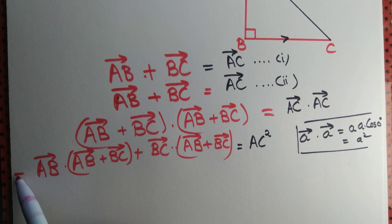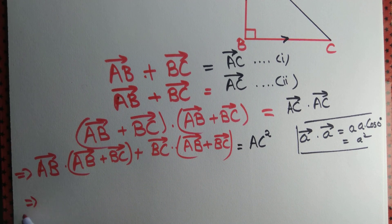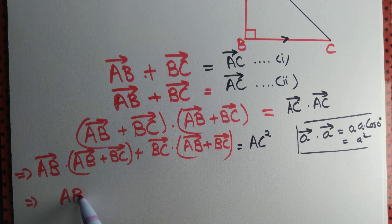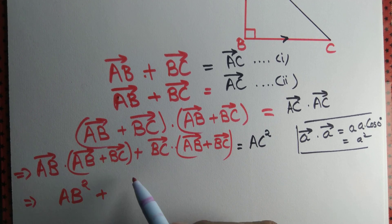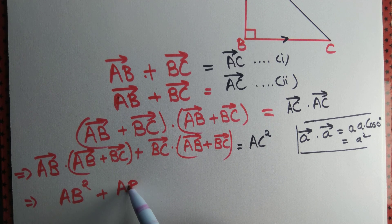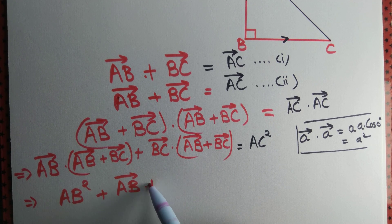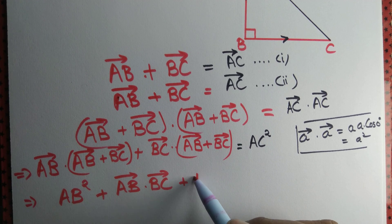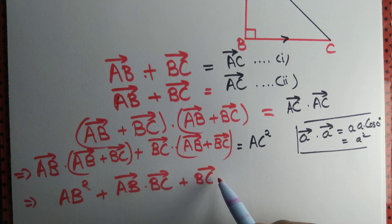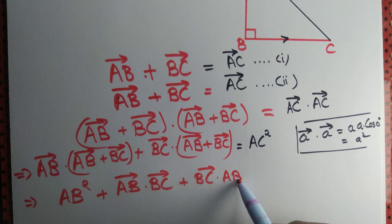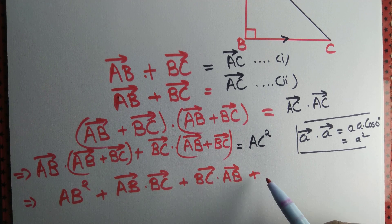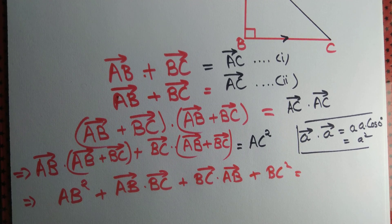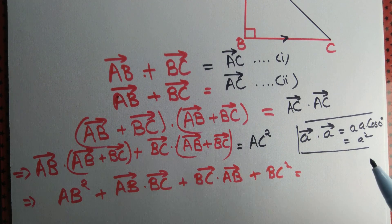Again we apply distributive law. Then we have AB dot AB is AB square, AB dot BC, let's write it as it is, BC dot AB, we write it as it is, BC dot BC is BC square. Right hand side we can copy as it is, AC square.